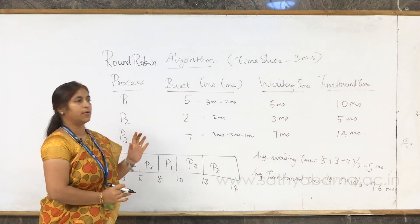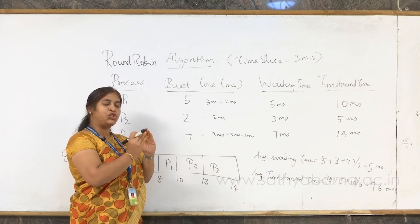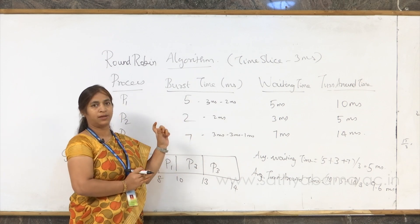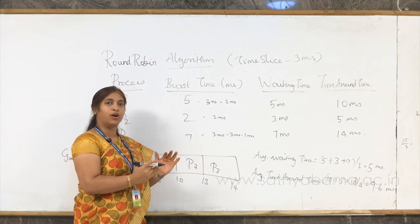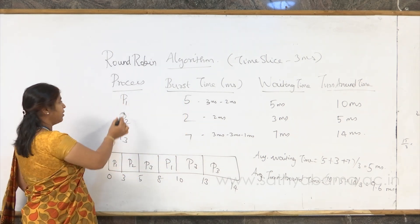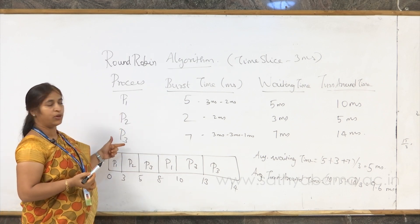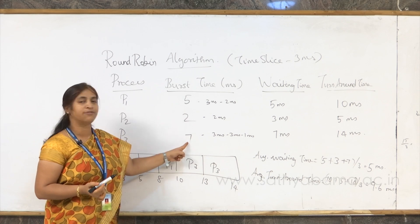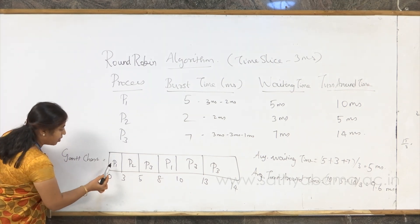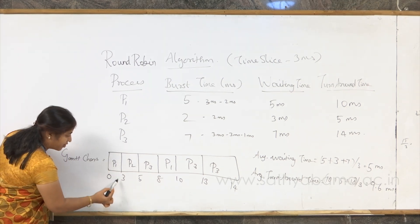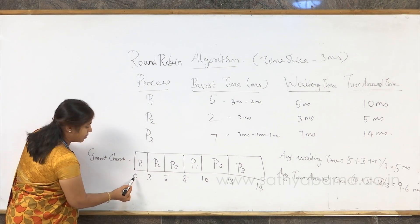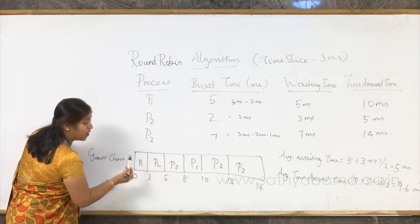In this algorithm, each process is given the CPU for the defined time slice. Once the time is up, whether the task is over or not, the CPU is forcefully taken back. We have the same 3 processes — P1, P2, and P3 — with burst times of 5, 2, and 7 milliseconds. In the Gantt chart, P1 gets the CPU first for 3 milliseconds from 0. Its burst time is 5 milliseconds, but only 3 milliseconds are allocated per time slice.